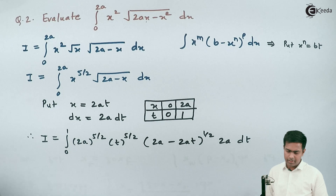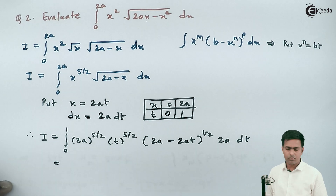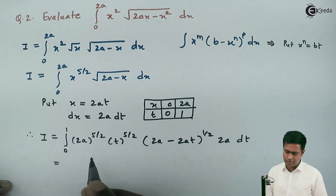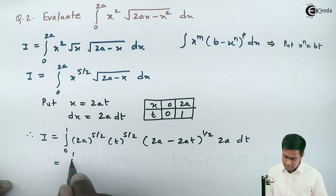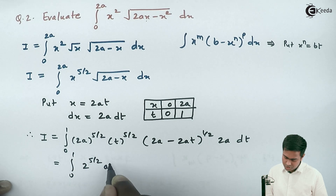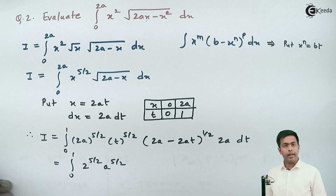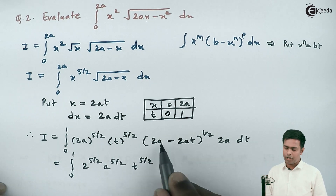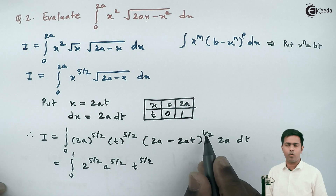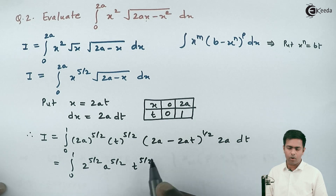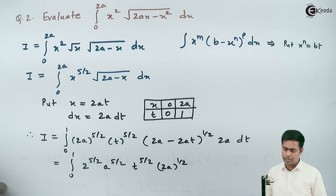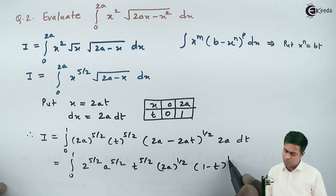Simplifying, we get 2 raised to 5/2 times a raised to 5/2 as a constant term which I'll keep for calculation. Next, t raised to 5/2 remains. From (2a minus 2at) I take 2a common, giving 2a raised to 1/2 times (1 minus t) raised to 1/2. Again 2a as is, times dt.